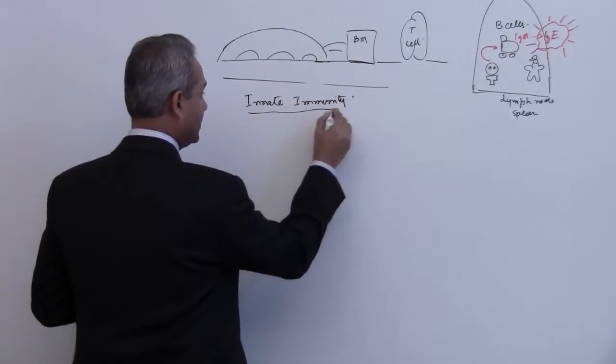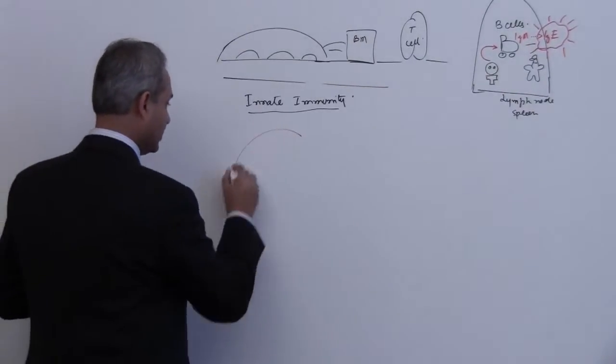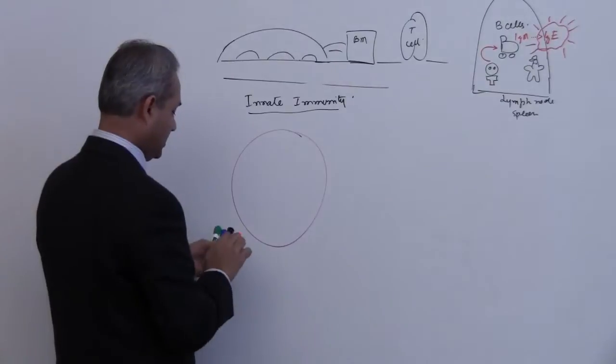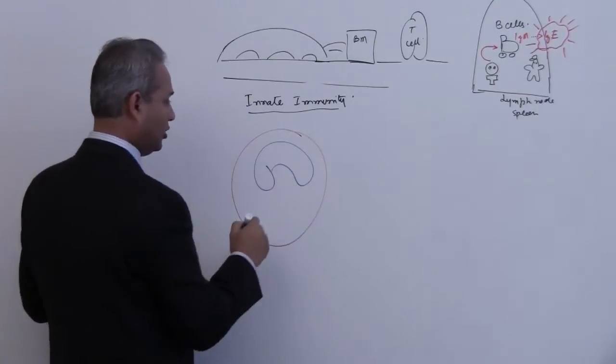It is a white blood cell, it is a granulocyte, it has granules which show up in its cytoplasm. So here it is, the eosinophil, bilobed nucleus.